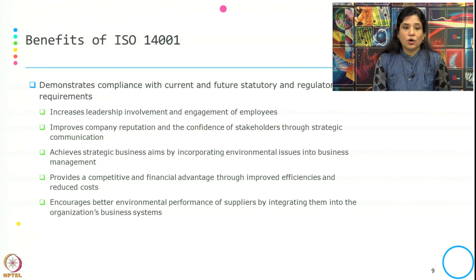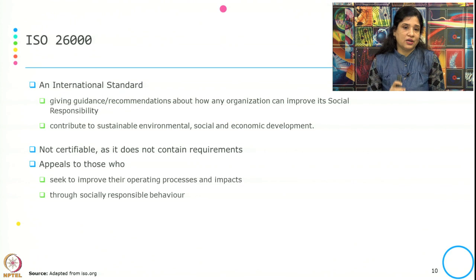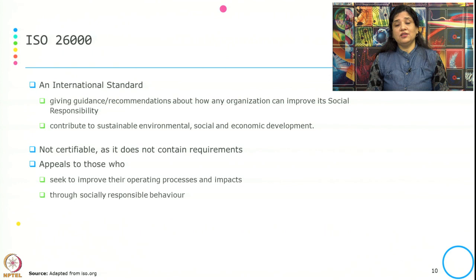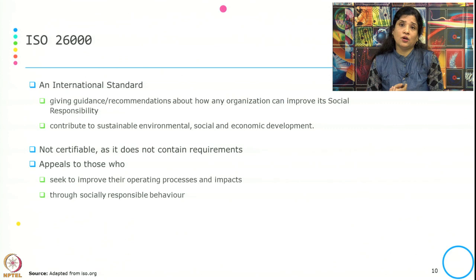Now let us look at another ISO standard — ISO 26000. We discussed this when covering social sustainability, as it is related to that domain. ISO 26000 is an international standard that gives guidance and recommendations about how any organization can improve its social responsibility. It specifically helps organizations with guidance on how they can improve social responsibility and contribute to sustainable environmental, social, and economic development.